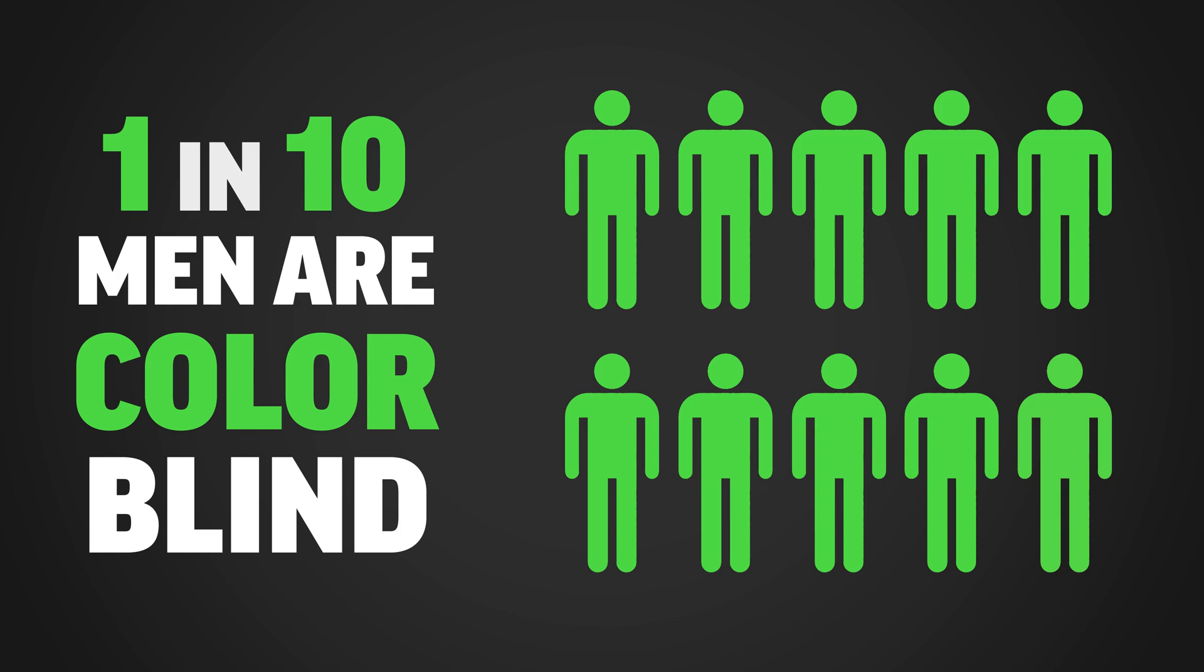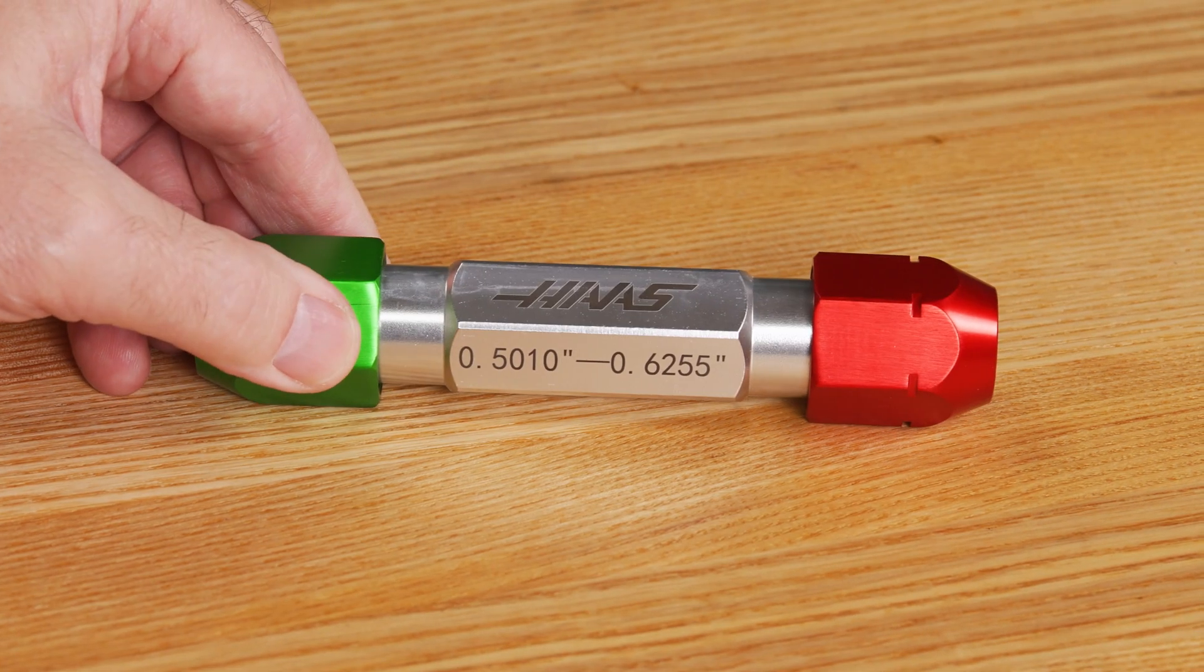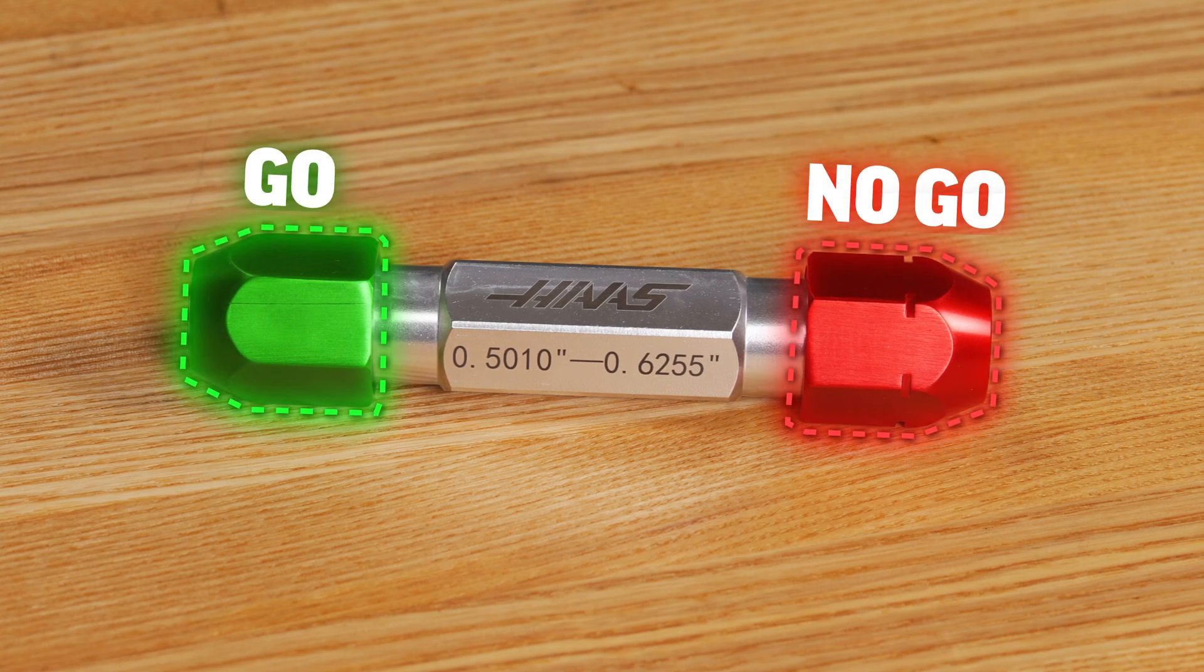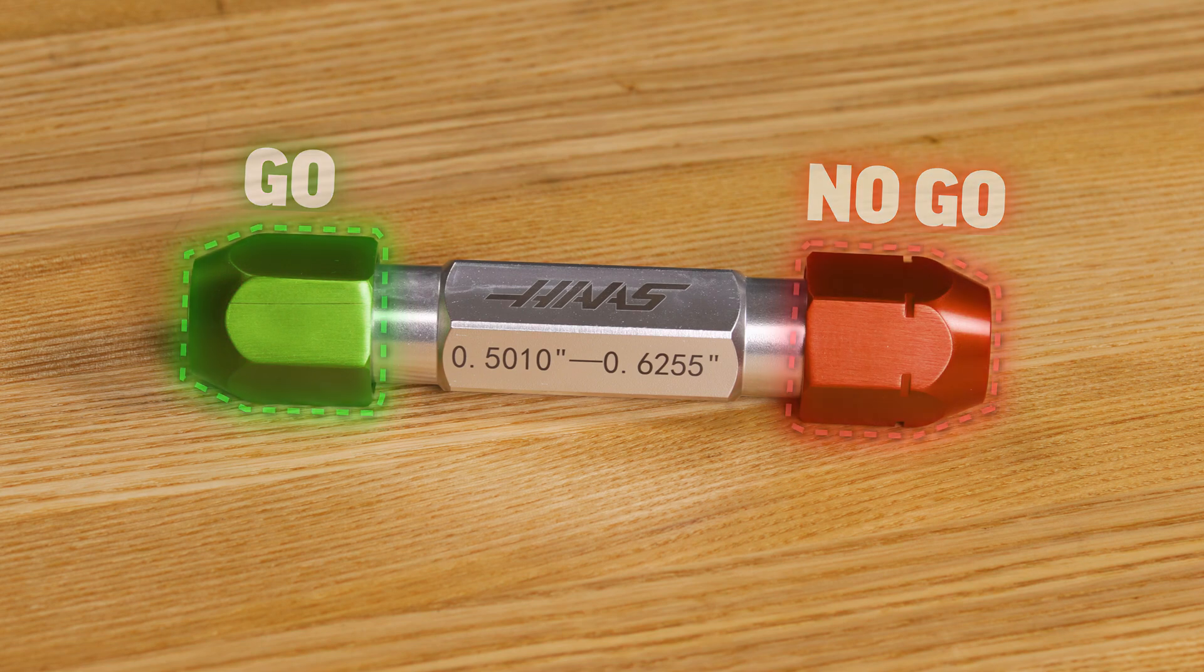Now, this might sound like a random fact, but as many as one in ten men are colorblind. And this matters when looking at gauge pin handles because while many of us see the red and green color markings on our go, no go pin holders, a good number of operators just see this.